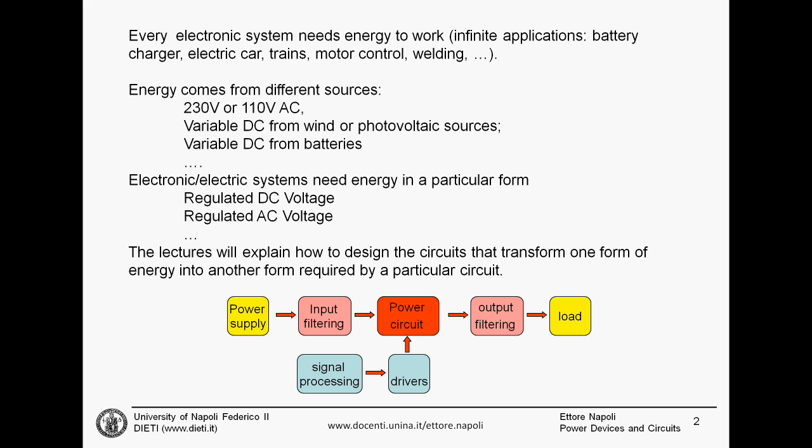We have, for example, 230V and 110V AC, variable DC from wind or photovoltaic sources, and variable DC from batteries and many other sources. These sources are not adequate for the typical electric or electronic systems that need regulated energy in other forms, for example, regulated DC voltage or regulated AC voltage.